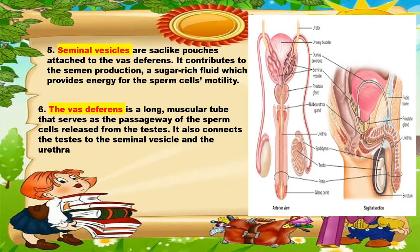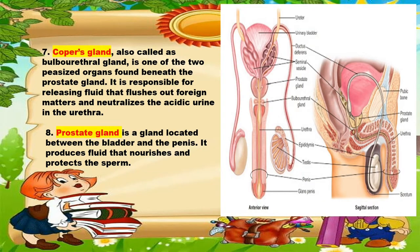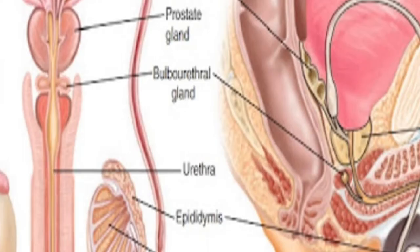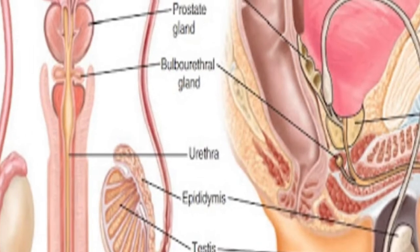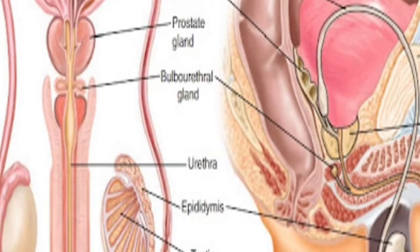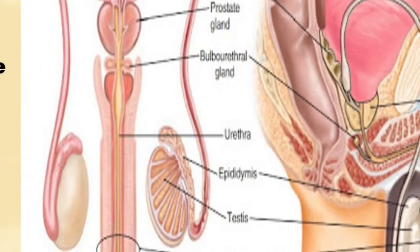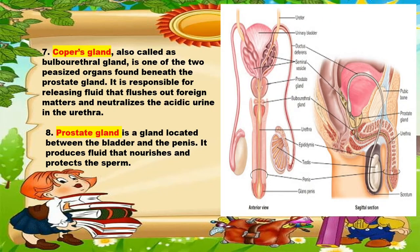The next one is the Cowper's gland, also called the bulbourethral gland. It is one of two pea-sized organs found beneath the prostate gland. It is responsible for releasing fluid that flushes out foreign matter and neutralizes the acidic urine in the urethra.